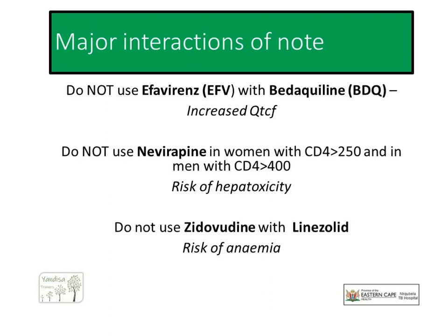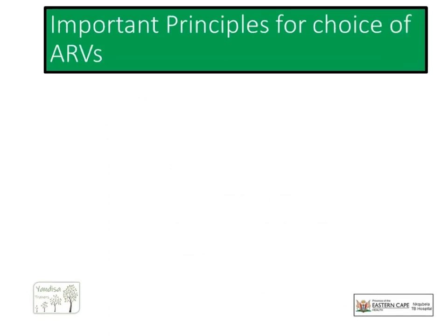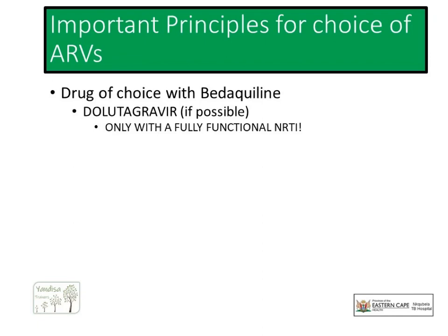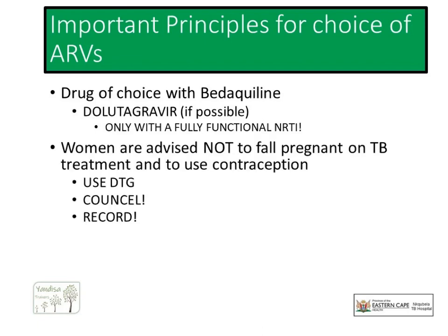Luckily, we have a new ARV option that has become available in the last 6 months. Our new drug of choice to use with bedaquiline is dolutegravir, an integrase inhibitor that forms part of the new recommended South African first-line regimen. The challenge with dolutegravir is that early evidence suggests there might be a small risk of neural tube defects when women conceive whilst taking dolutegravir. Therefore, women need to be thoroughly counselled about ARV options. In our drug-resistant environment, we strongly recommend women not fall pregnant whilst taking their DRTB treatment, due to both the risk of the illness and the large number of drugs they will be taking.